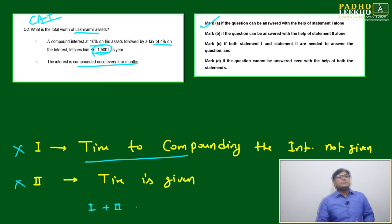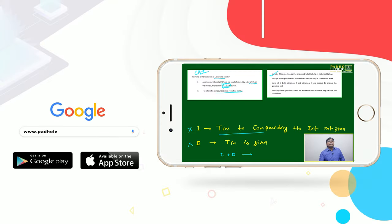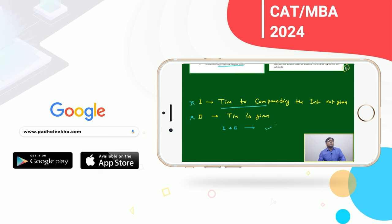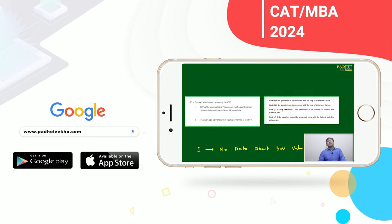If you are merging statements one and two, then you are getting all the data: rate of interest, the deduction, total amount, and how it is compounding. Then you will be able to mark it.